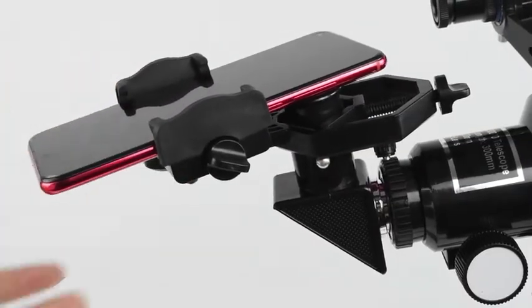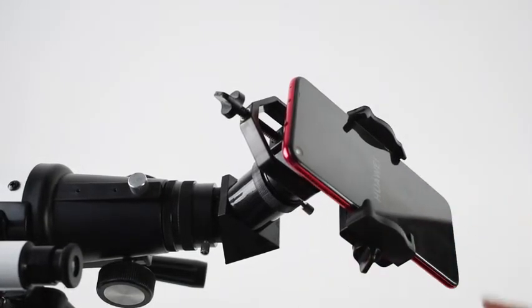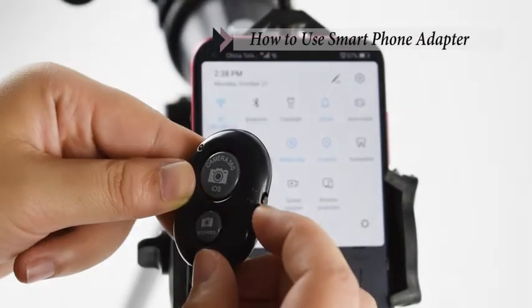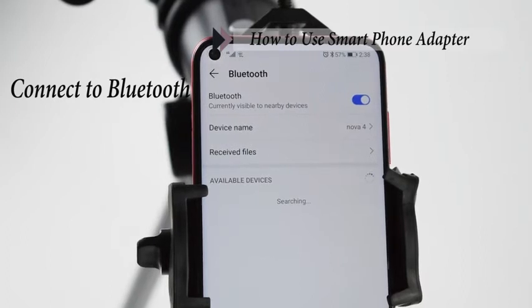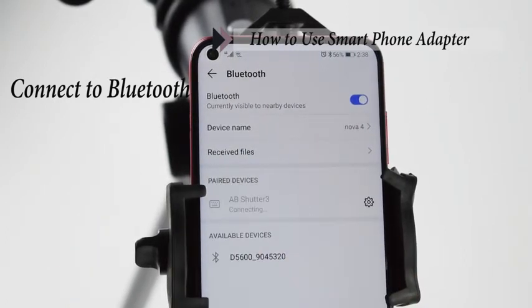Install the phone adapter on the eyepiece, with the phone lens aimed at the eyepiece. Turn on the Bluetooth button switch and find the Bluetooth named AbShutter 3 in the phone. Press the camera button to take a photo.